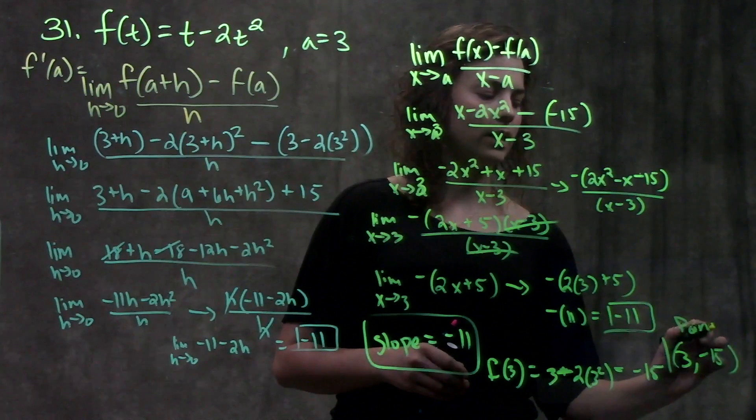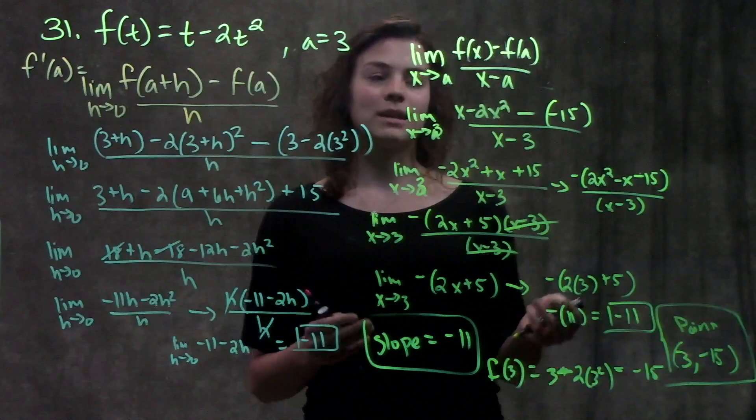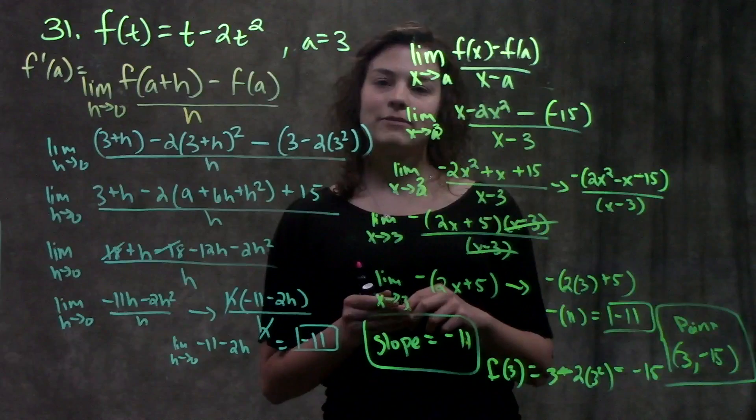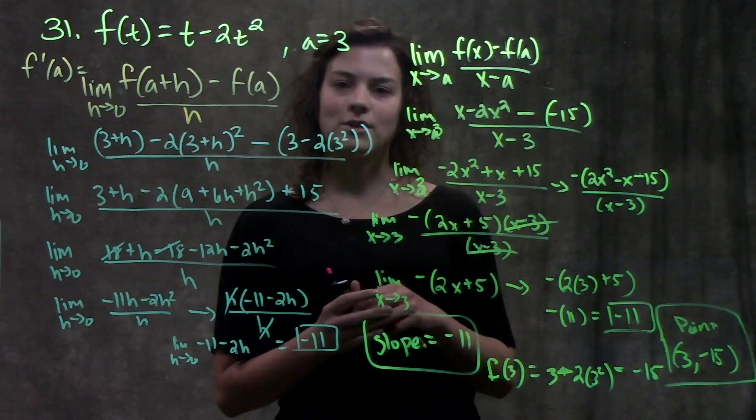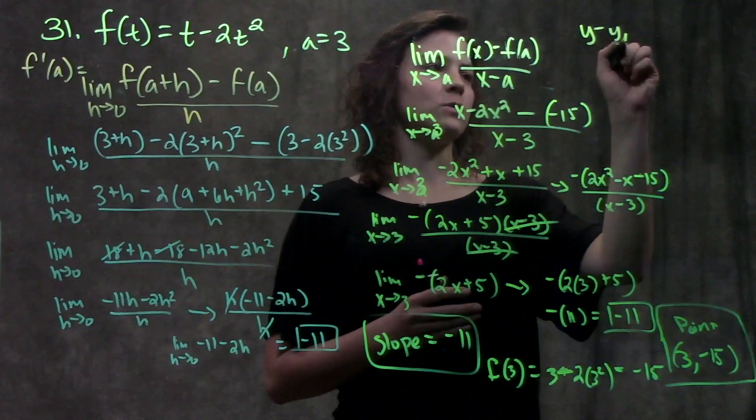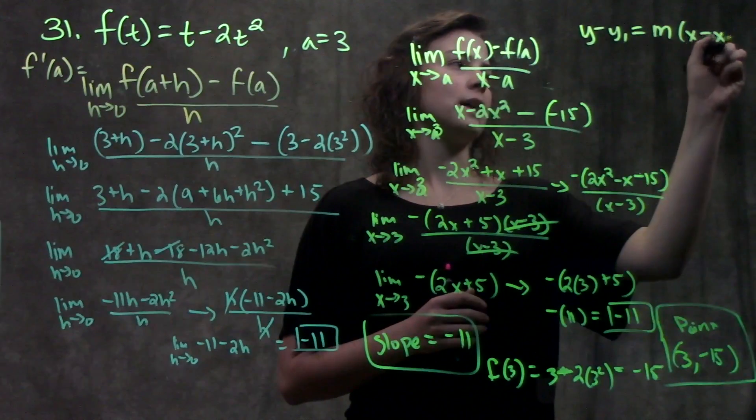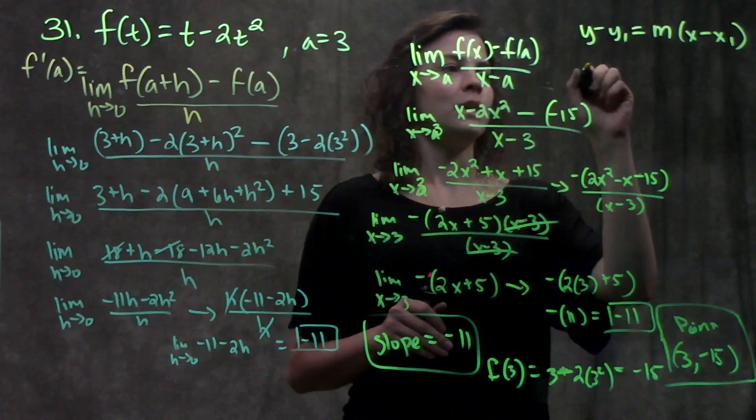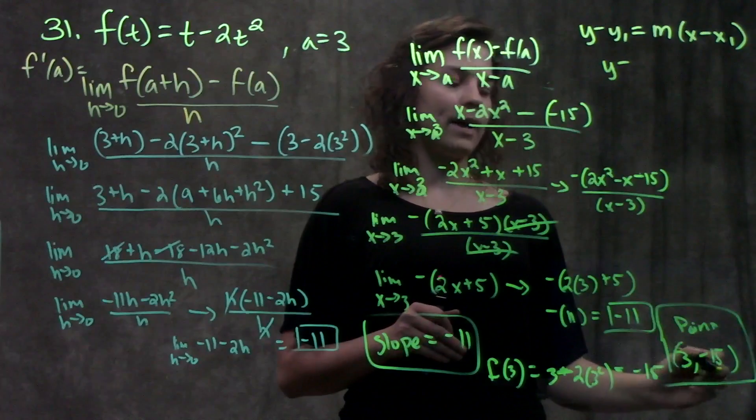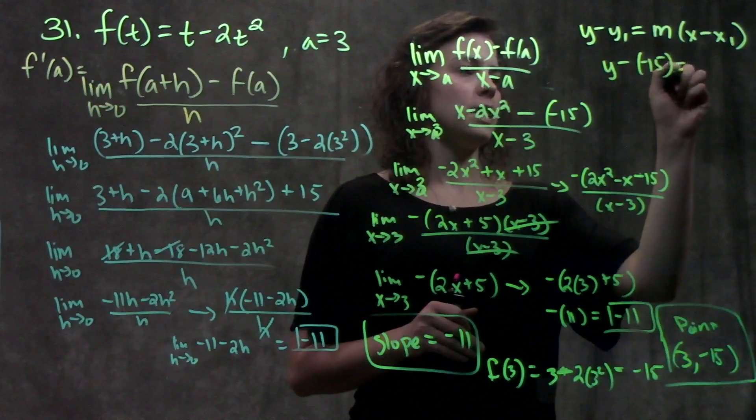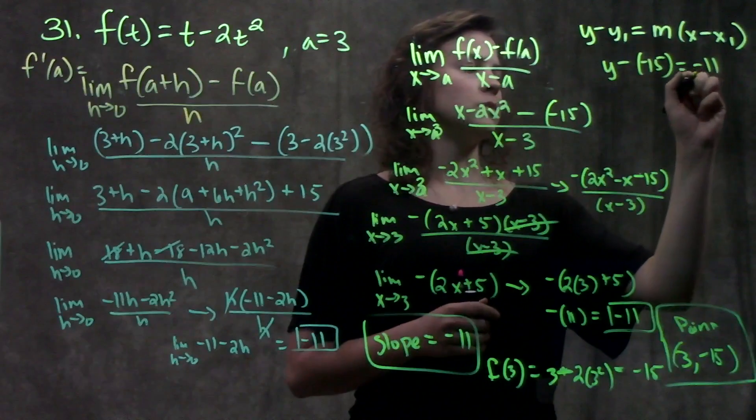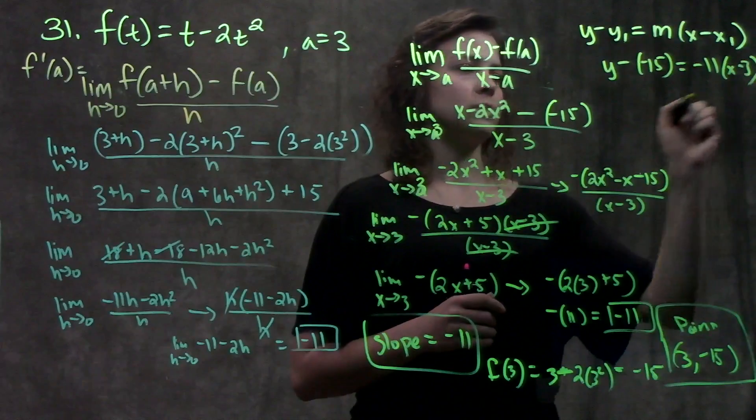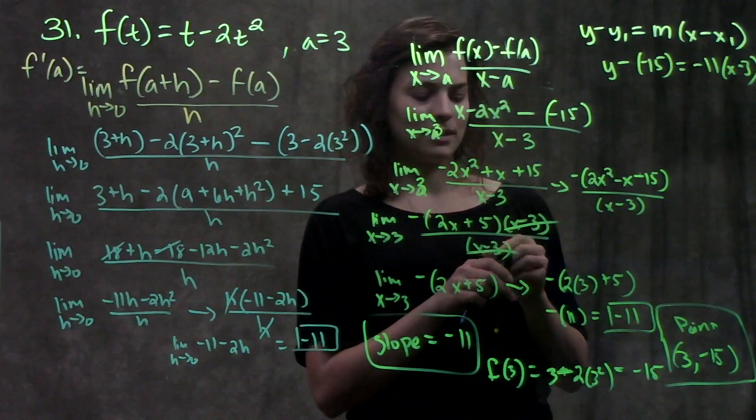Here is our point. There was our slope. Now we're just going to put these two things together and make the equation of our line. There's a couple different equations of the line that you can use. Probably the easiest one is y minus y1 equals m times (x minus x1). Here you just plug in your x's, your y's, and your m, or your slope. So for your y's, you have y minus our y value, which is minus 15, equals m, which is our slope, which equals negative 11 times x minus our x value, which was 3.